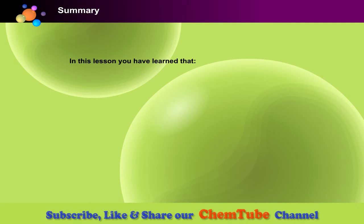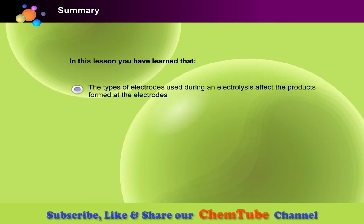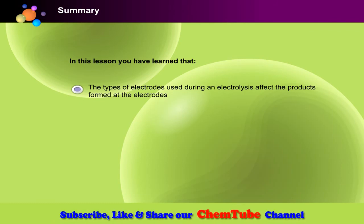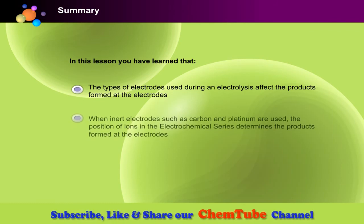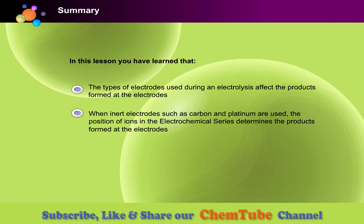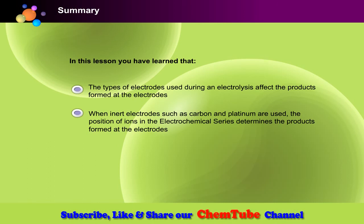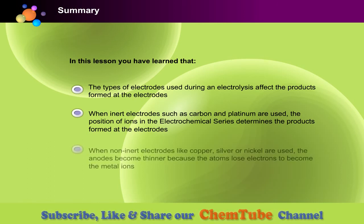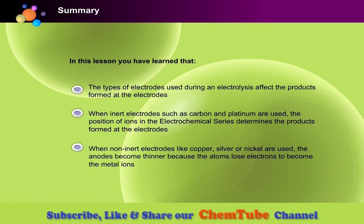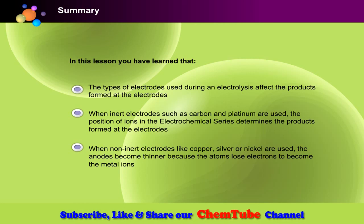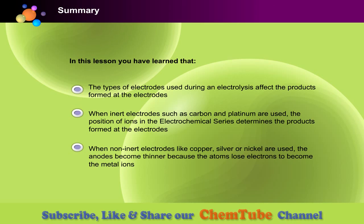In this lesson, you have learned that the types of electrodes used during electrolysis affect the products formed at the electrodes. When inert electrodes such as carbon and platinum are used, the position of ions in the electrochemical series determines the products formed. When non-inert electrodes like copper, silver, or nickel are used, the anodes become thinner because the atoms lose electrons to become metal ions.